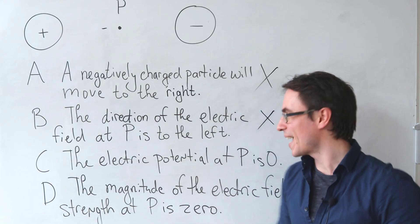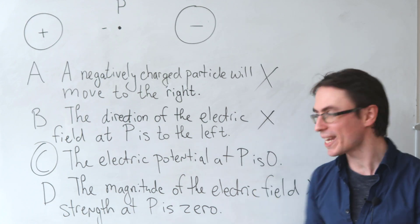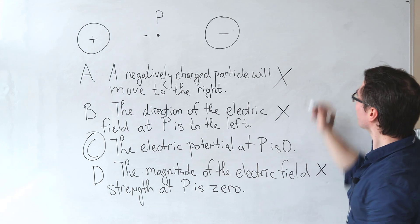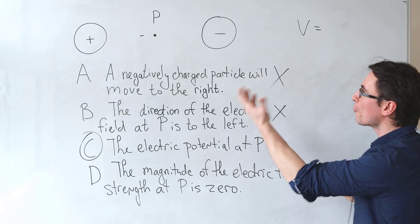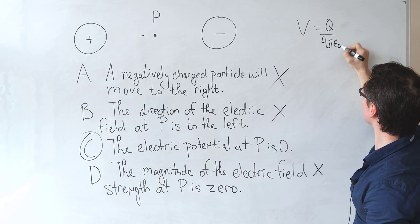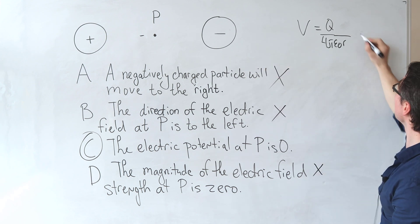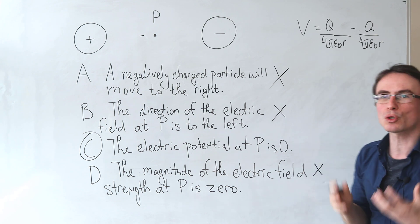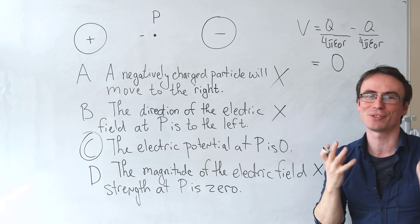Now, by the process of elimination, C has to be the correct answer. But why is the electric potential actually zero? Well, remember the electric potential is just a scalar quantity. So if one of them is positive, let's say a charge Q, this will be the electric potential due to that charge. But if the other one is negative Q, we just need to sum up those two potentials algebraically, giving us a net result of zero.